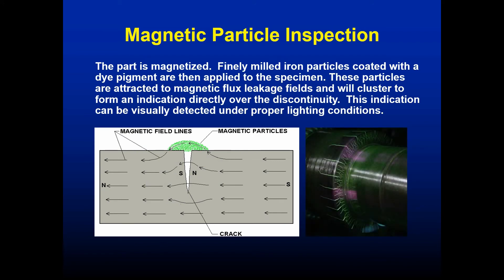Magnetic particle inspection uses electromagnetic fields and dyed iron particles. The part is magnetized, and finely milled iron particles coated with a dye pigment are applied to the specimen. These particles are attracted to magnetic flux leakage fields and cluster to form an indication directly over a discontinuity, which can be visually detected under proper lighting conditions. Fluorescent dye pigments can also be used so indications show up clearly under black light.